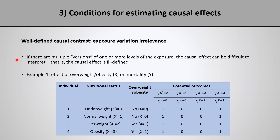The problem is that if there are multiple versions of one or more levels of the exposure, the causal effect can be difficult to interpret — that is, the causal effect will be ill-defined. This happens when the exposed or unexposed groups are defined vaguely, so that two individuals both classified as exposed actually have different levels or versions of the exposure, and for that reason their potential outcomes are also different.